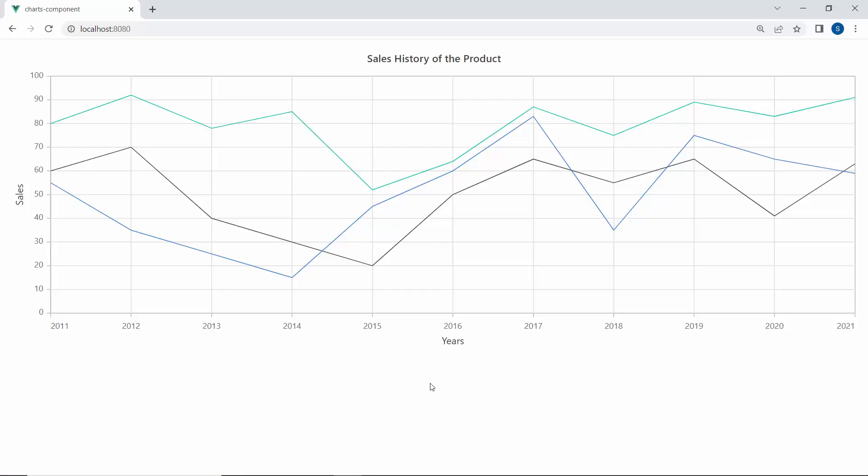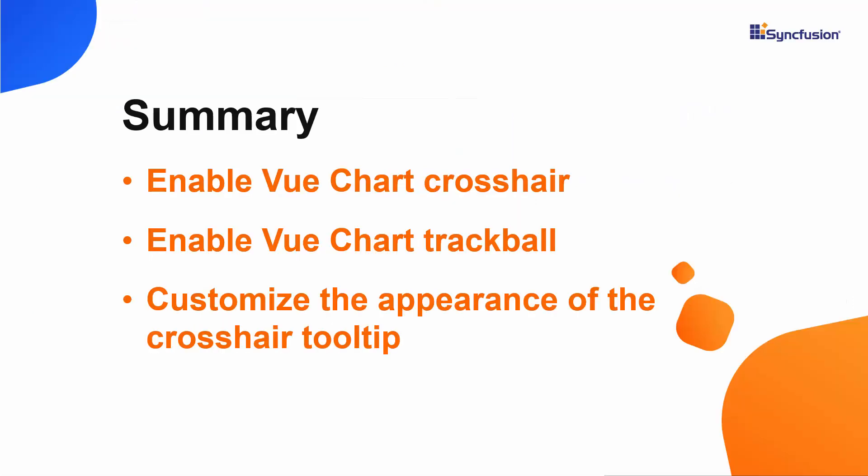You can see the line series chart showing sales information about three different people with the trackball feature enabled. Let's quickly recap what we learned. We saw how to add crosshairs and trackballs to Syncfusion Vue charts, and we also discussed how to enable and customize a crosshair tooltip. If you would like to see a working example, you can download one from the GitHub link shared in the description below. I have also included a link where you can check if you qualify for our community license, which gives you a free license key for our entire Vue component suite. If you found this video useful, don't forget to click the like button and subscribe to our channel to watch more videos like this. Thanks for watching.